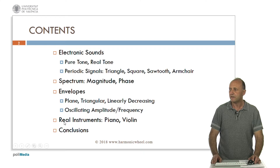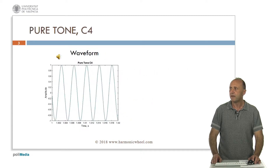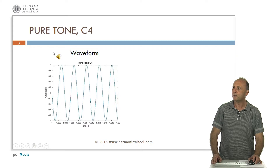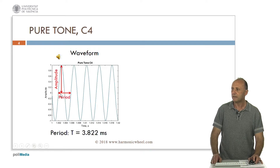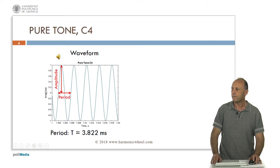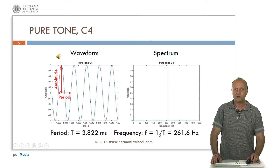Then we will show the spectra of real instruments such as the piano and violin, and we will finish with some conclusions. This is the pure tone for C4. It has been represented on a time axis. This is the waveform. Its length is called period. For a C4 it is 3.8 milliseconds. The amplitude is here normalized from minus 1 to plus 1. The inverse of the period is the frequency. For a C4 it is 260 Hertz.